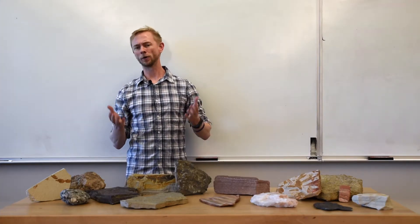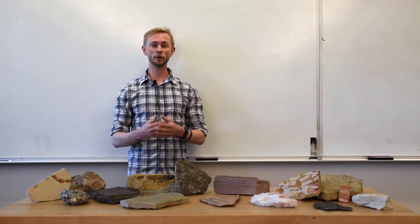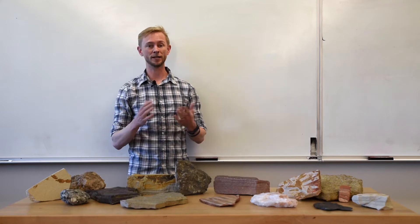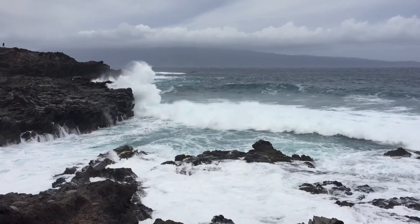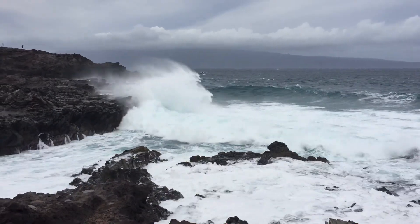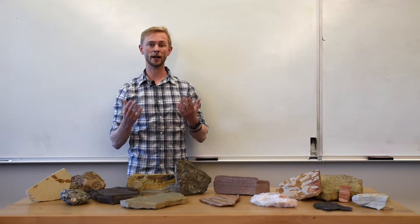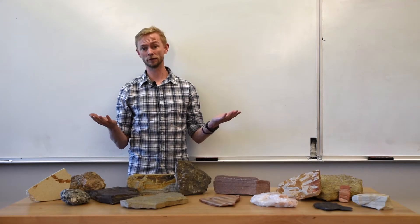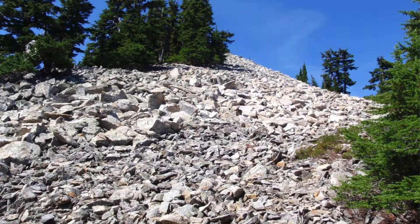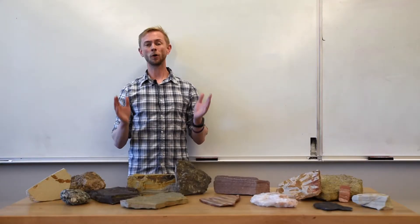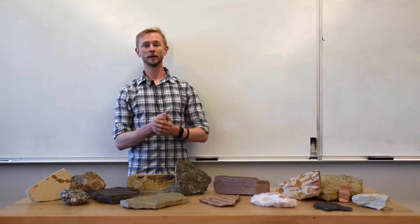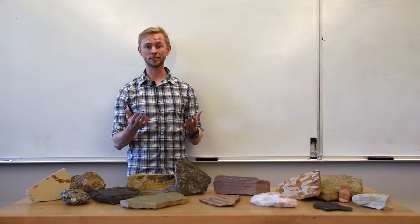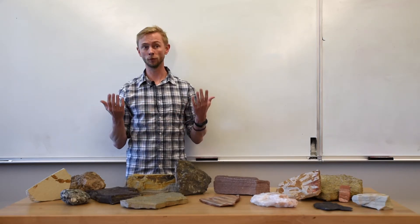Whenever rocks are at or near the Earth's surface, they're exposed to the atmosphere and other processes or elements. Things like rain, wind, extreme changes in temperature, pounding by ocean waves, biologic activity, etc. can all start acting on a rock. The end result? These processes turn big rocks into little rocks. We call this whole suite of processes that break down rocks weathering, because many of the individual processes involve exposure to weather.